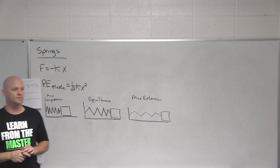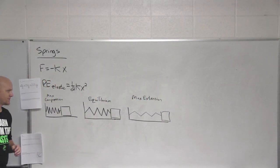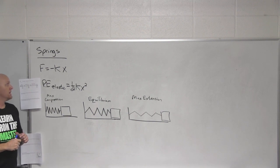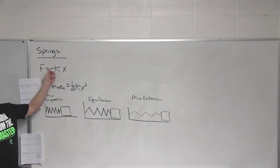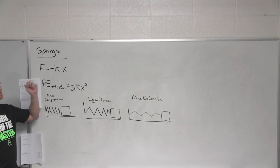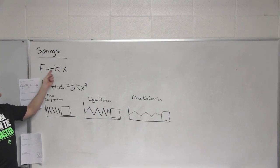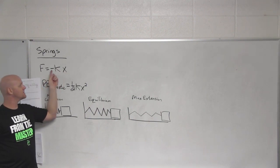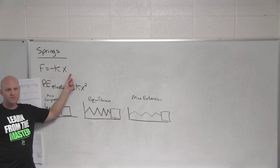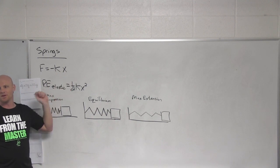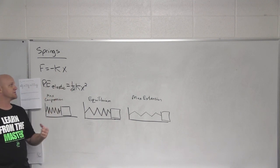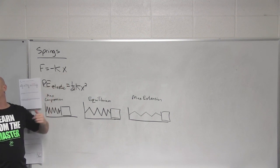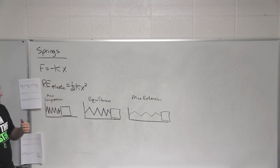Let's talk about springs. If we look at springs, the force of a spring is governed by Hooke's Law: f equals negative kx. Technically, this should be negative k delta x — it's related to the displacement. You displace the spring away from the equilibrium position. But a lot of people, and a lot of textbooks including yours, just shorten it down to f equals negative kx.